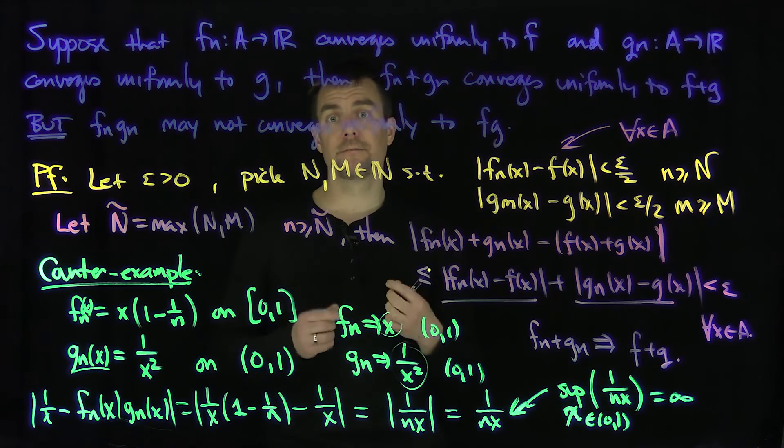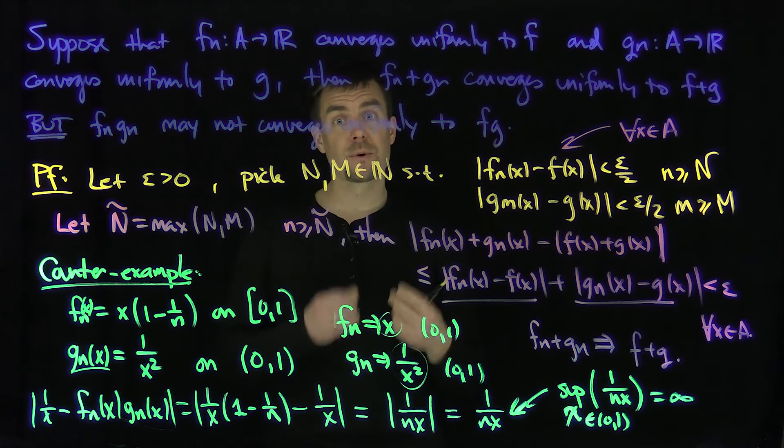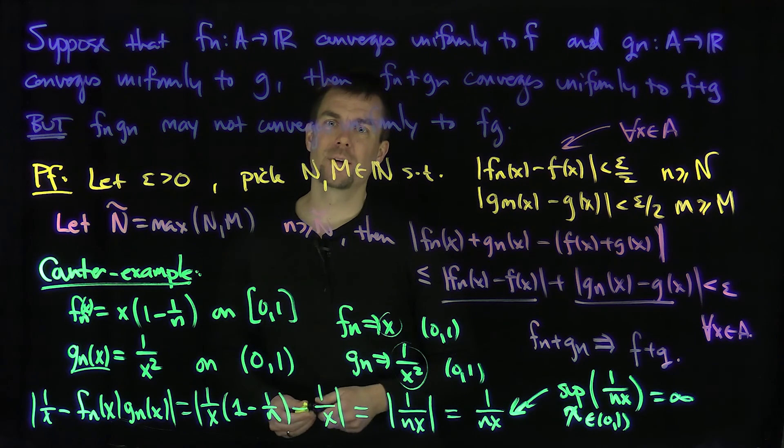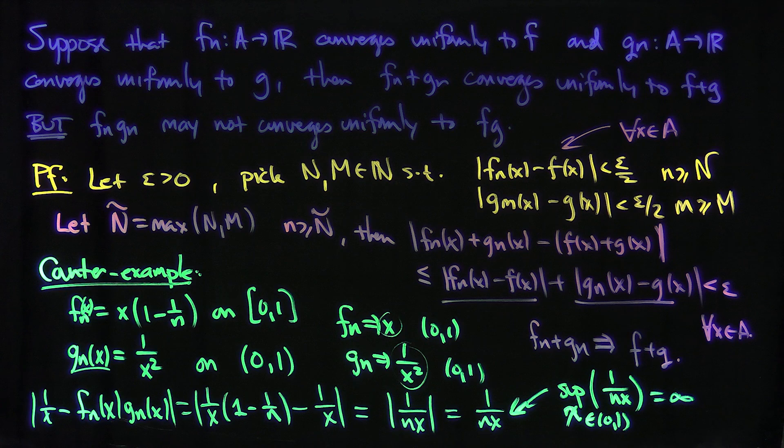So uniform convergence of the product can fail if one of the functions is unbounded. However, if both the function sequences Fn and Gn are uniformly bounded, then you can prove uniform convergence of the product. Thank you very much.